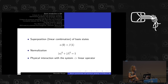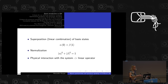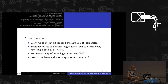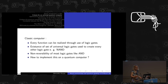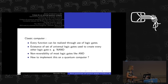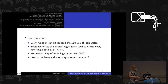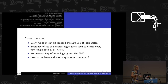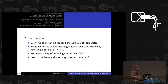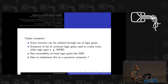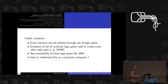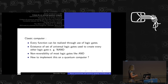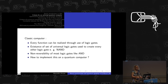When we look at a classical computer, we can ask what exactly it is. The most basic thing one can imagine is: we have two bits, zero and one, and we have functions which we want to implement on these bits to perform calculations on them, and every one of our functions can be realized by the use of logic gates.